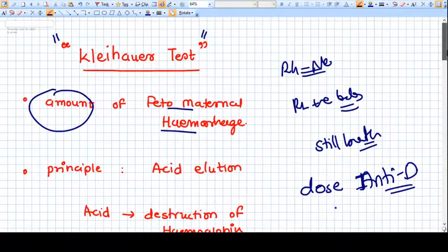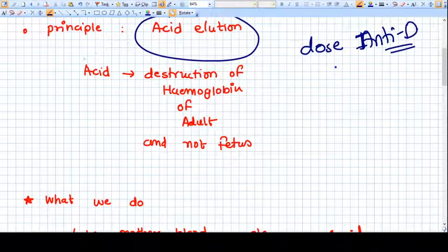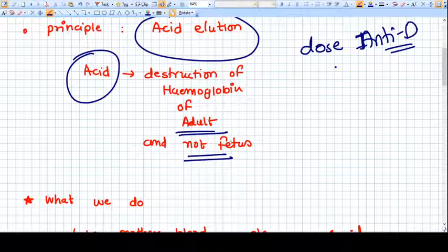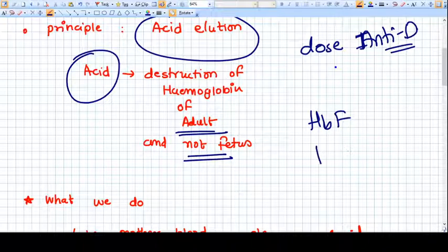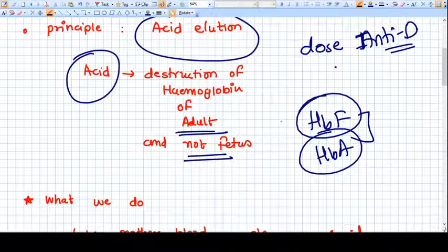Now what is the principle of this Kleihauer test? The acid elution is the principle. That means the acid makes the destruction of adult hemoglobin but not the fetal hemoglobin. The fetal hemoglobin HbF is resistant to acid and alkali compared to adult hemoglobin. This difference in the property of these two hemoglobins is used in this test.